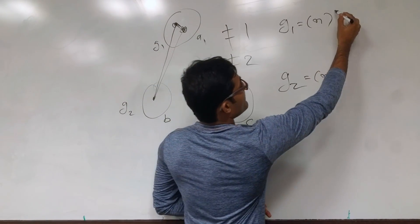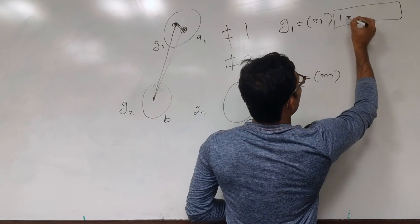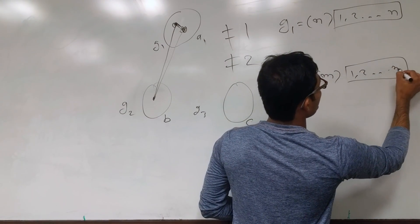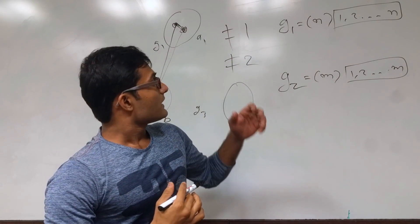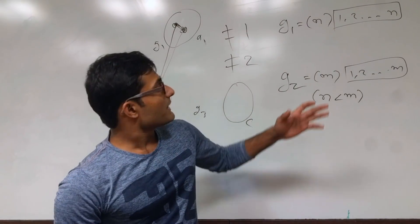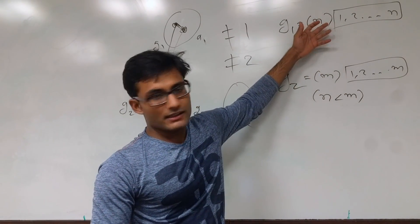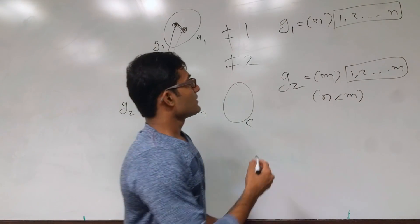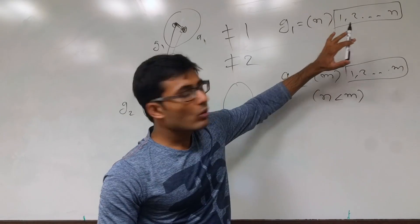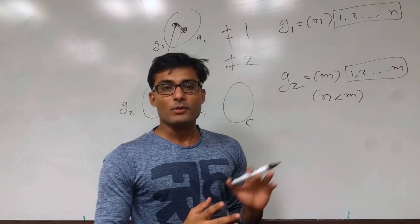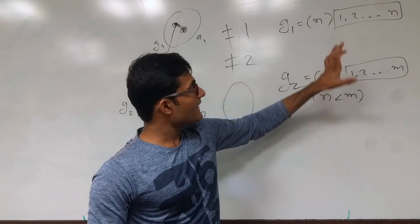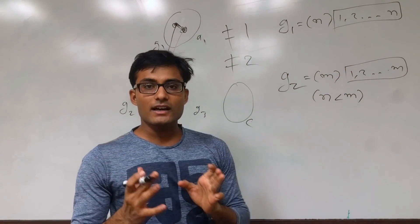So we have nodes 1, 2, ... N in group 1 and nodes 1, 2, ... M in group 2. For now, let's assume N is less than M, meaning group 2 has more nodes. We can easily see that when there is no edge between them, that is one valid solution — this group has no edge to that group.